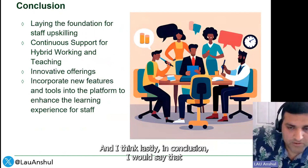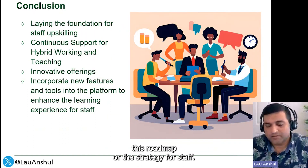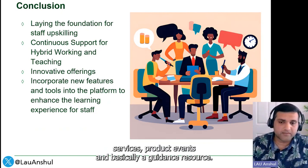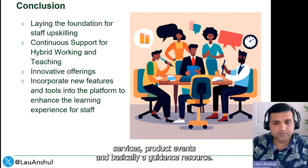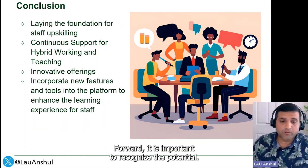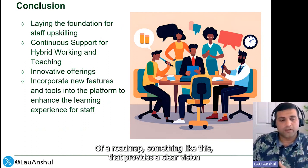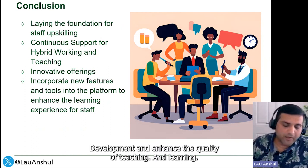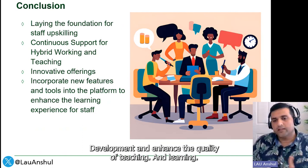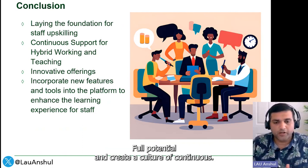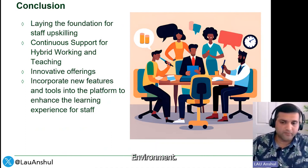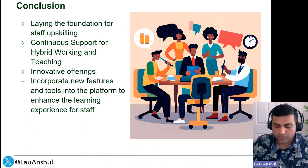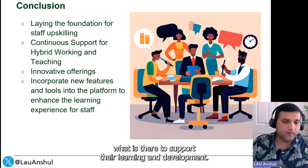In conclusion, this roadmap is a strategy for staff development that offers innovative, high-impact services, products, events, and guidance resources. As we move forward, it's important to recognize the potential of a roadmap like this to provide a clear vision, revolutionize staff development, and enhance the quality of teaching and learning. We can empower our colleagues to reach their full potential and create a culture of continuous improvement, as long as we give them a clear vision and a showcase of what is available to support their learning and development.